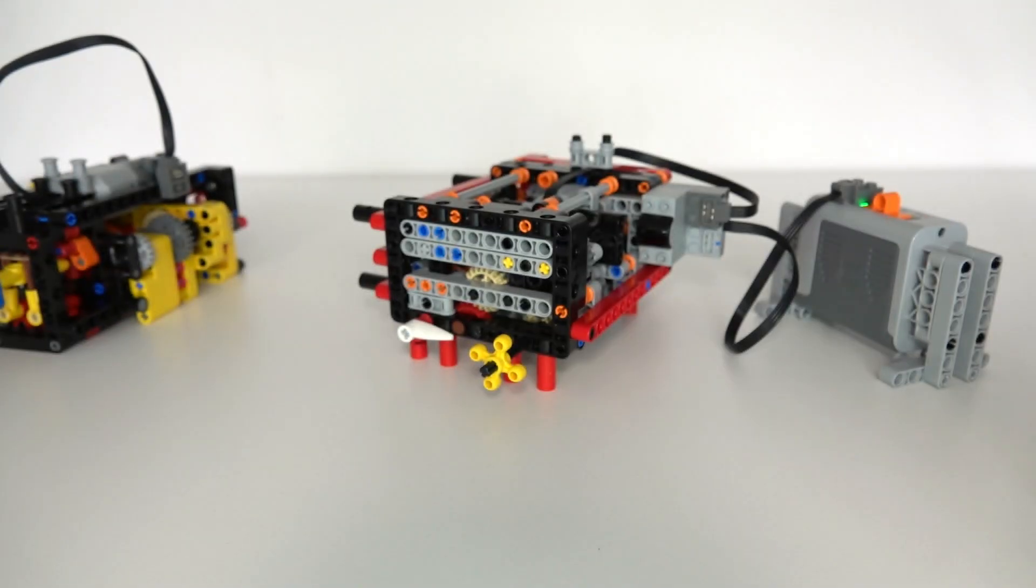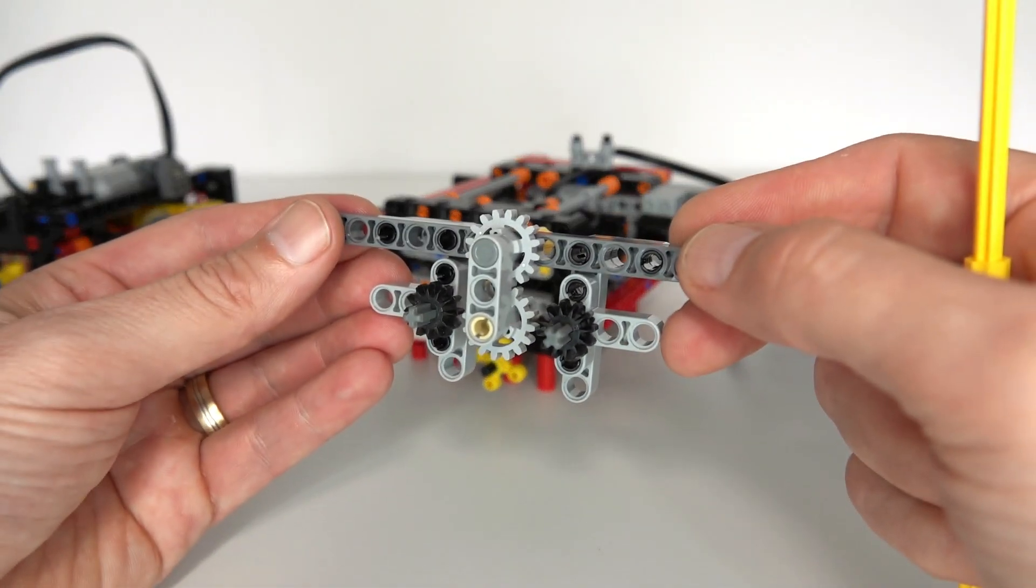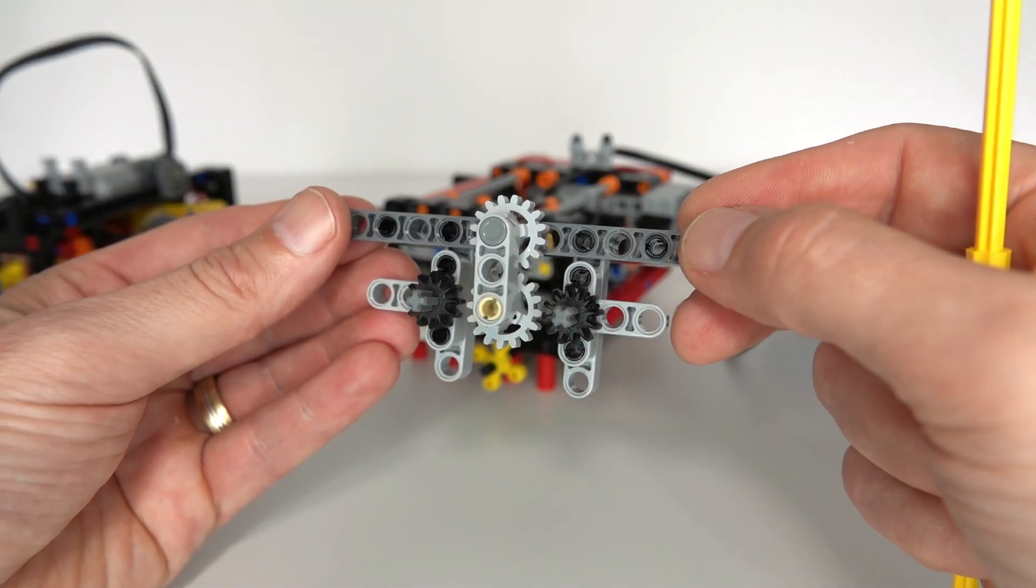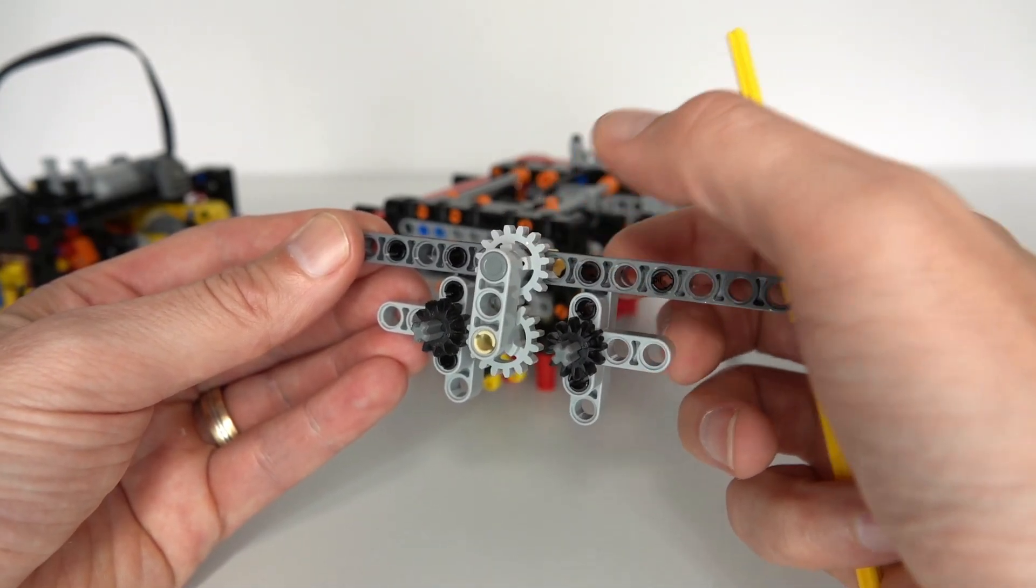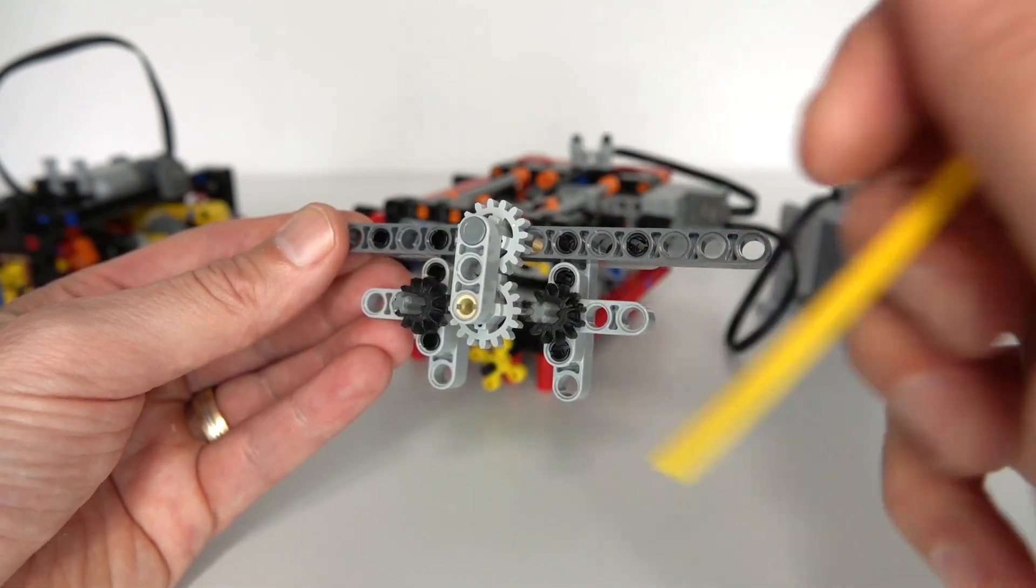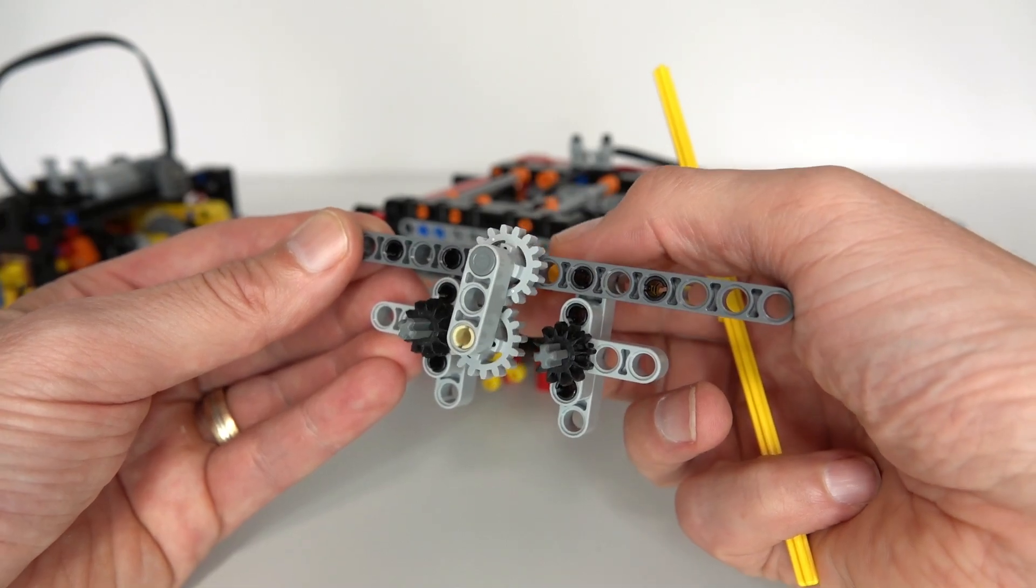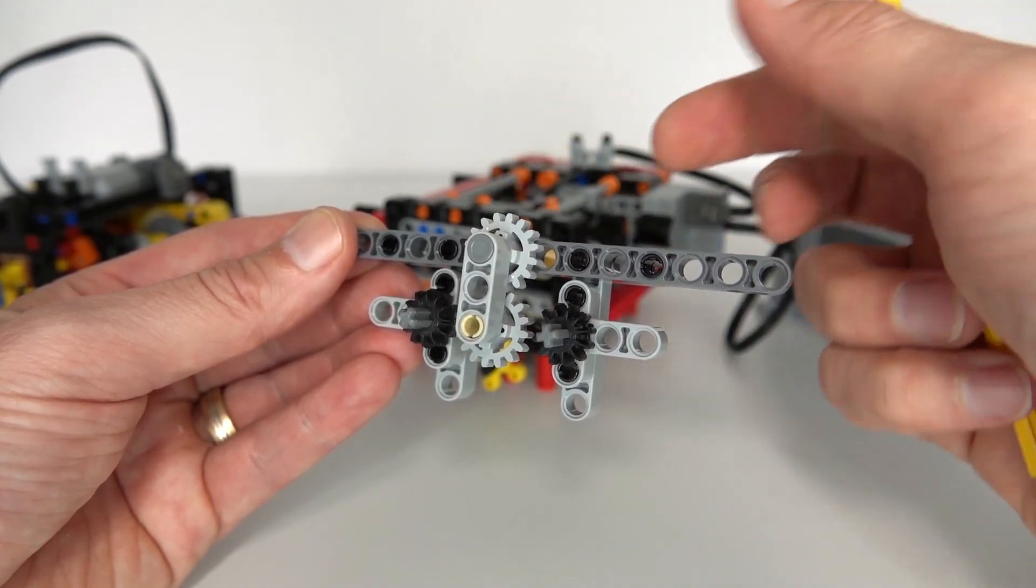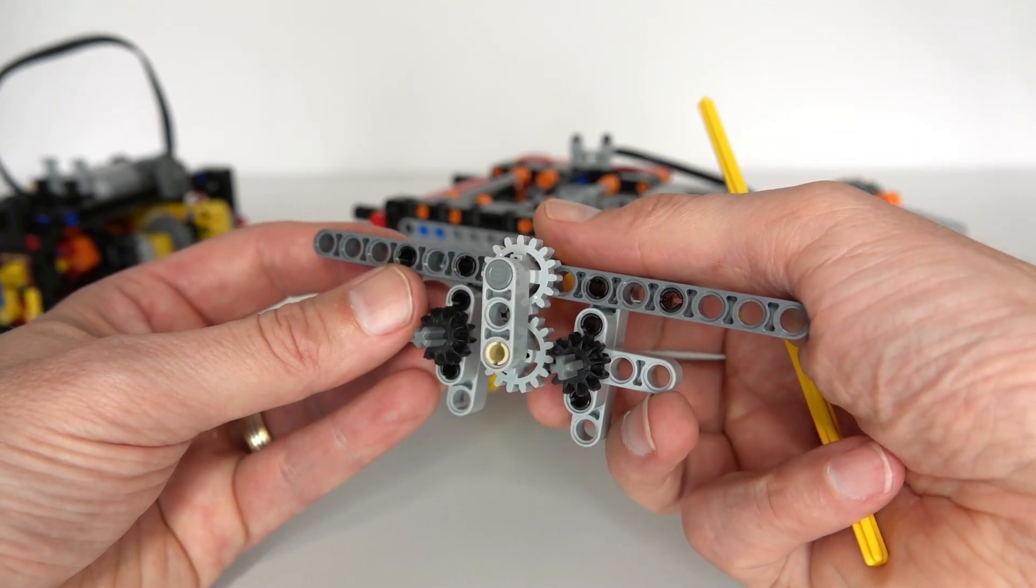You might be wondering how do you get a gearbox to react differently depending on the direction of rotation of the motor. The trick is to use a mechanism like this. I've got a 16-tooth gear connected through this loose lift arm that can move left and right. As that gear is being rotated by the motor, it will either swing to the left or to the right depending on the direction. For example, if the motor turns clockwise, it will connect to the left output, the left black 12-tooth gear.